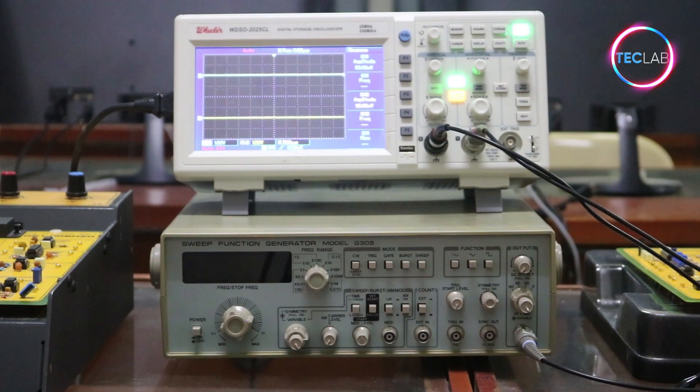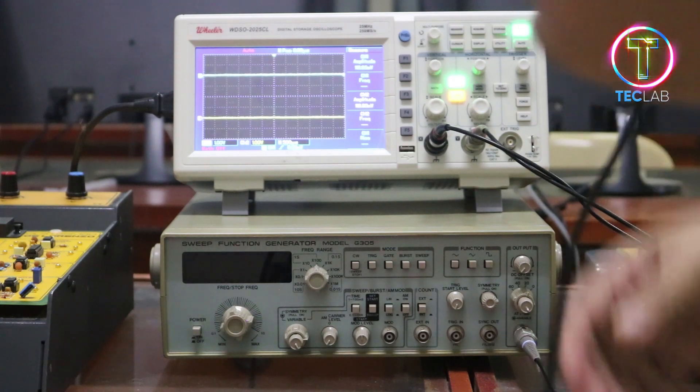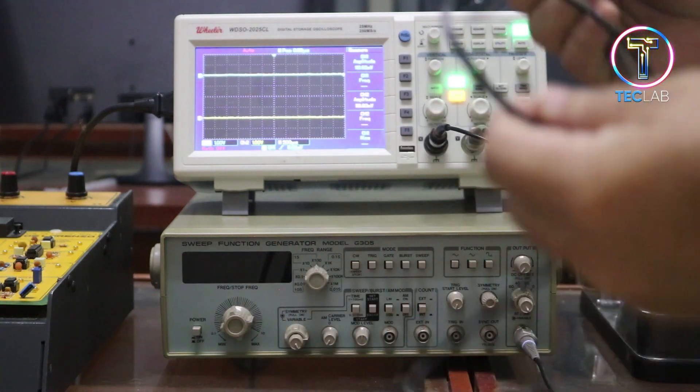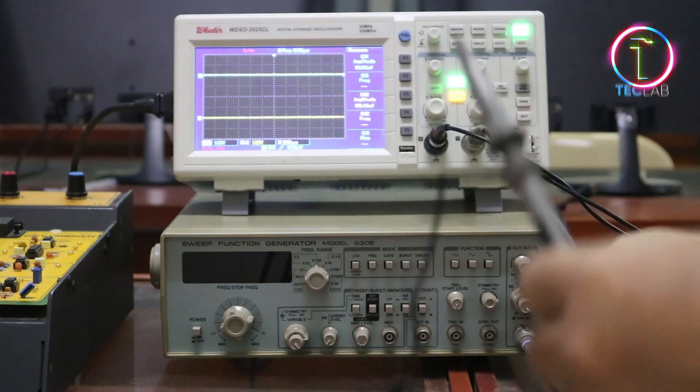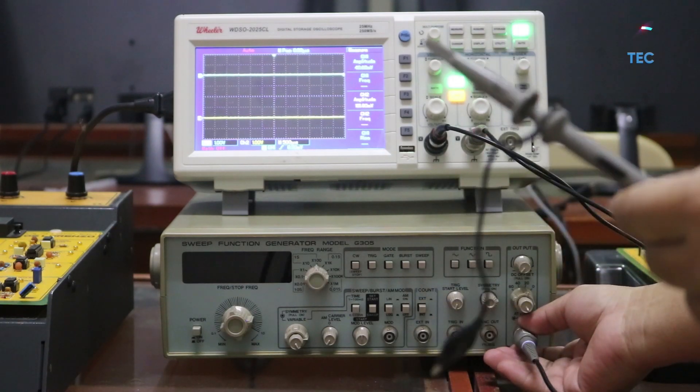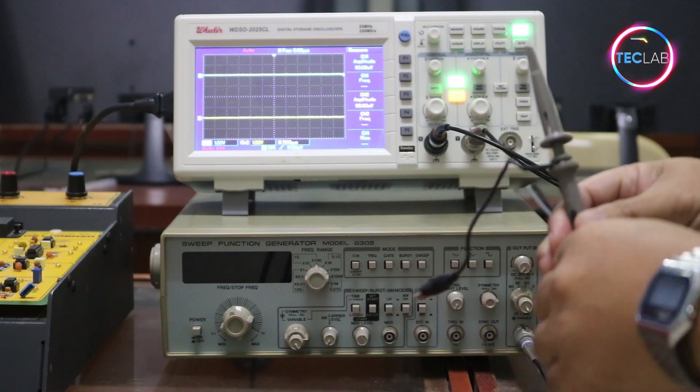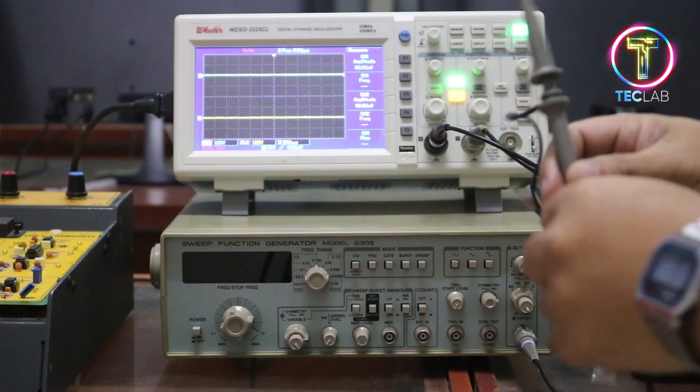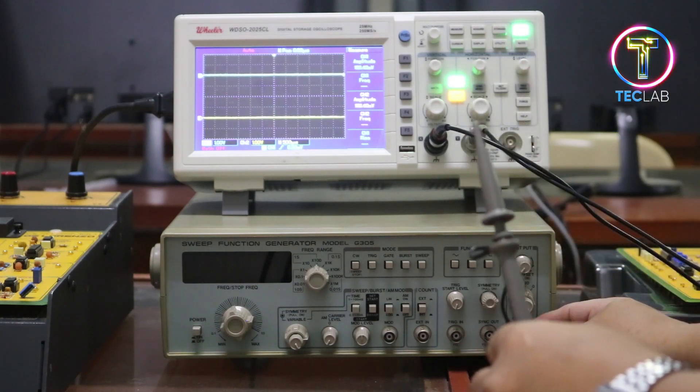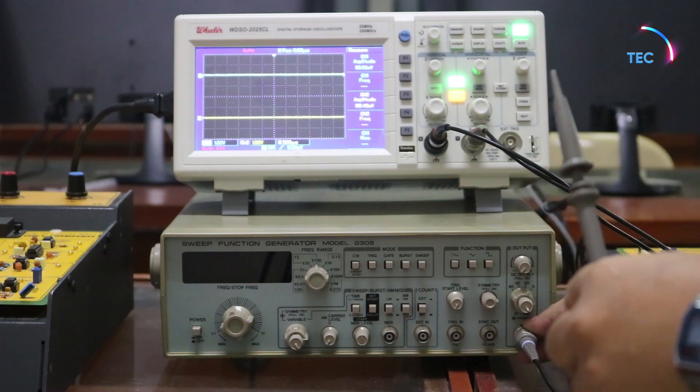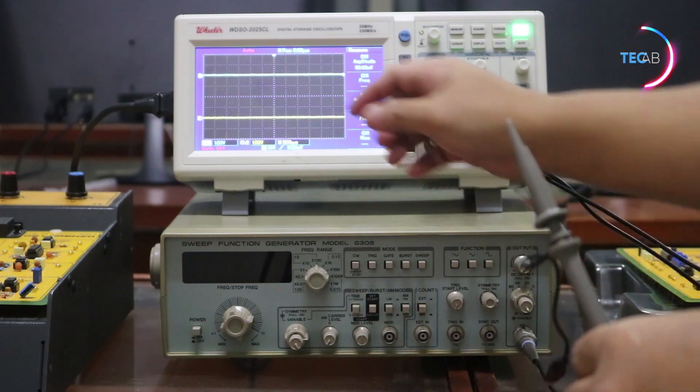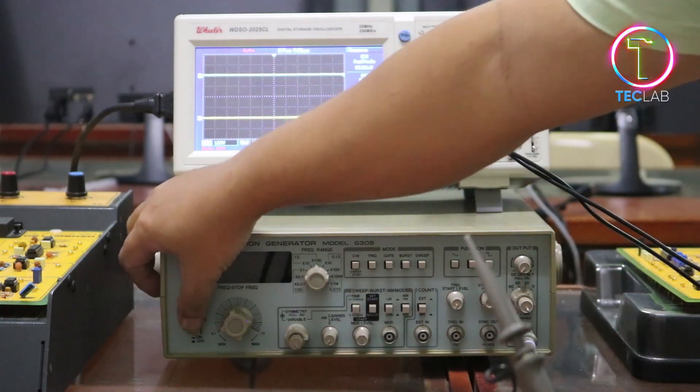After calibrating the oscilloscope, we're now going to calibrate the function generator. Like with the oscilloscope, we need also this logic probe in order to get the output of our function generator. We have the logic probe attached at the output of the 50 ohms signals here. And power on this power button.